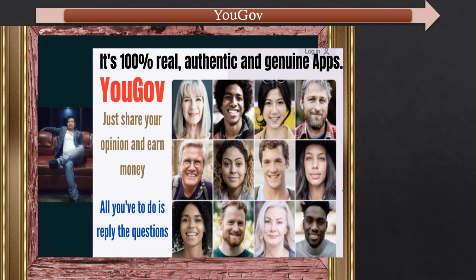The next app is YouGov. It's quite similar to the former app called Street Biz, but YouGov is based on a survey type — 100% survey type. In this account also you have to create an account like the same one. I don't think I need to tell you about how to create or open an account, as it's straightforward.